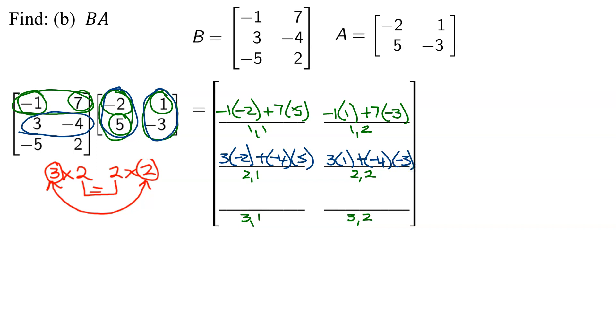And lastly, I'm going to work on row three times column one. So negative five times negative two, plus two times five. And the last one, row three times column two. Negative five times one, plus two times negative three.